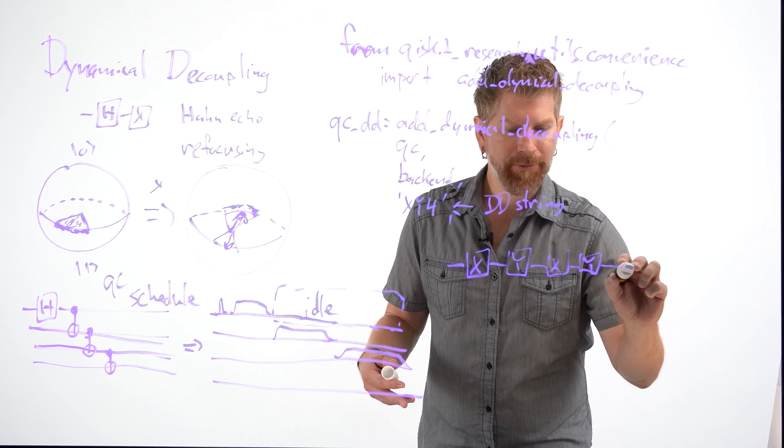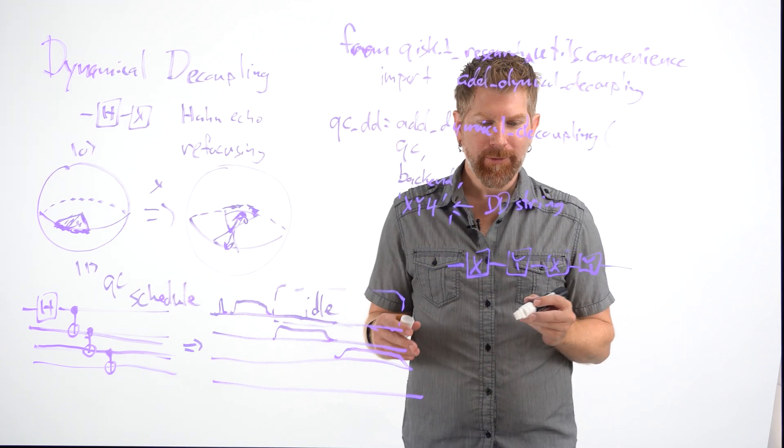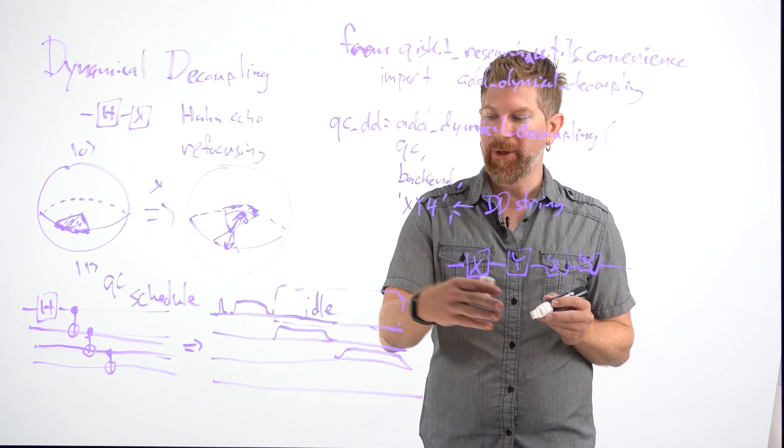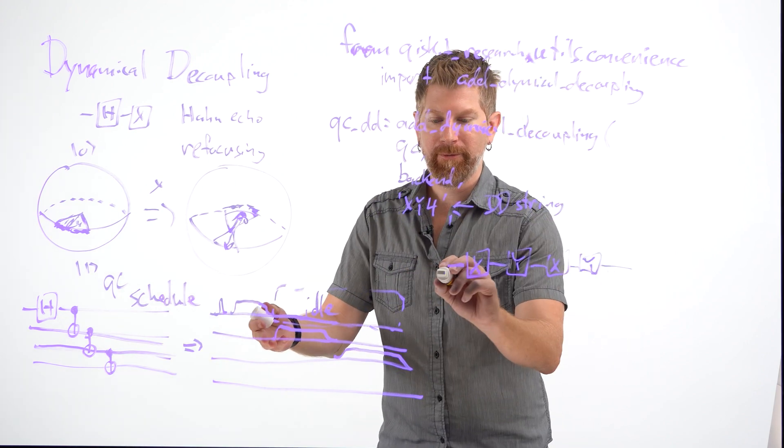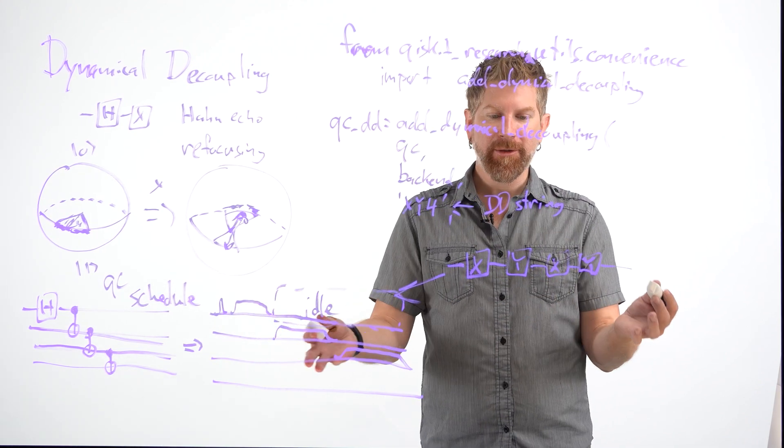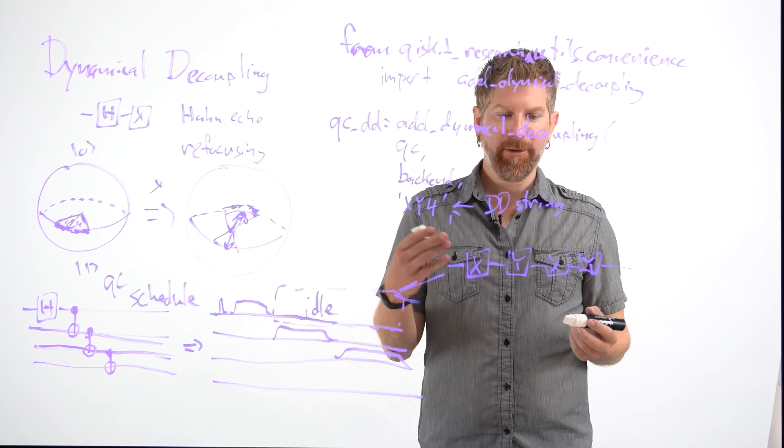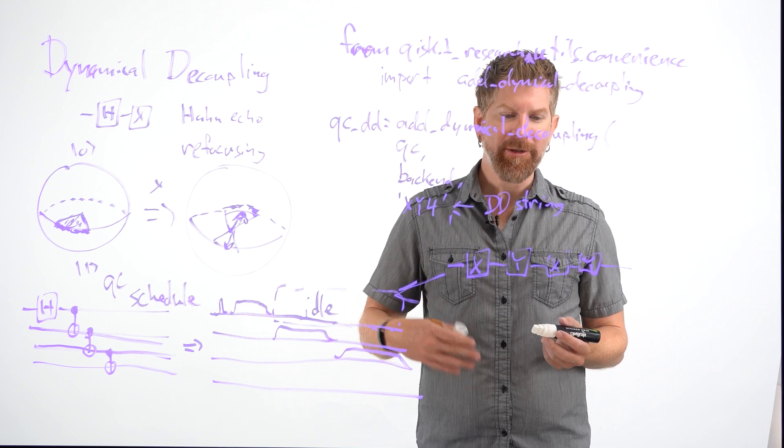XYXY. And it's called XY4 because there's four of them. And what these four gates do is they add up to the identity, but they keep the qubit occupied during its idle time. So they're spaced in the right way. The timing information is put in between them. And the qubit is thusly dephased.